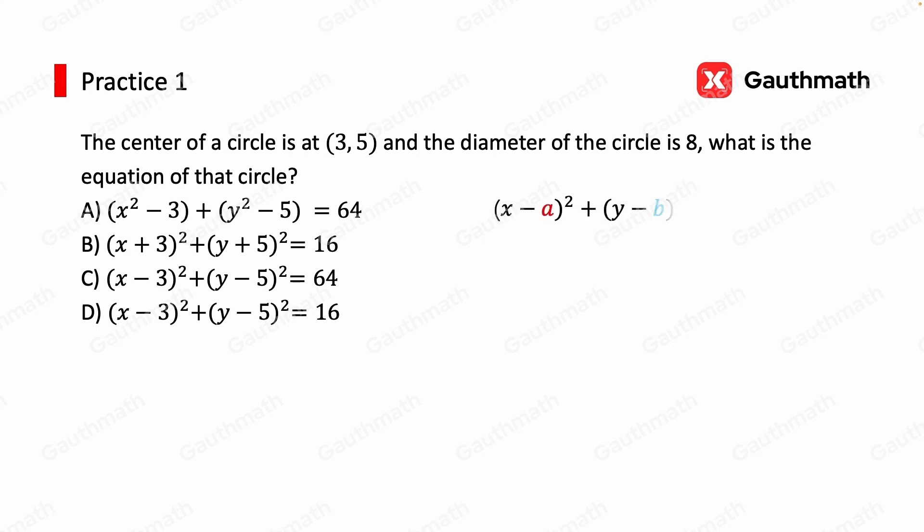Let's bring out the formula first. x minus A squared plus y minus B squared equals R squared. And we know that the center is at 3, 5. And thus, A must be 3, and B must be 5.